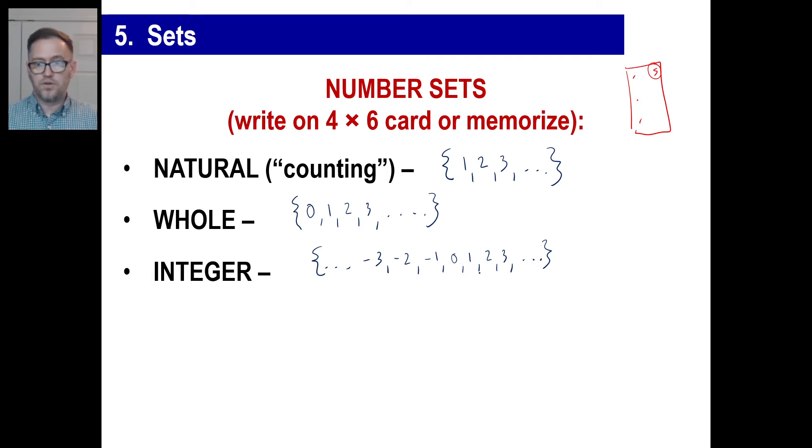So the integers include 0. It includes numbers like 1, 2, 3, 4, 5, 6, 7, 8, 9, 10, 11, 12, going on and on, and it goes negative 1, negative 2, negative 3, negative 4, negative 5, and so on. So those are integers.